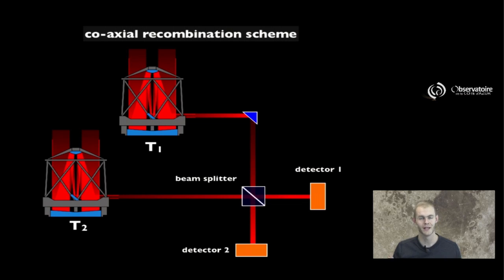Now, if we don't add anything else to the system, assuming that the tracking of our telescopes and that the delay lines operate perfectly, we're not going to see anything interesting happening on our detectors. We're simply going to see one of the outputs is going to be very bright, the other one is going to be very dark, and we're only going to be able to say that our interferometer is perfectly in phase, which is good but not that exciting.